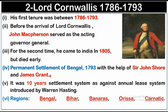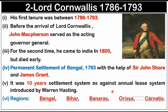The Permanent Settlement of Bengal 1793 was a ten-year settlement system, introduced against the annual lease system used by the first Governor-General Warren Hastings. The regions where this Permanent Settlement was applied were Bengal, Bihar, Banaras, Odisha, and Karnataka.